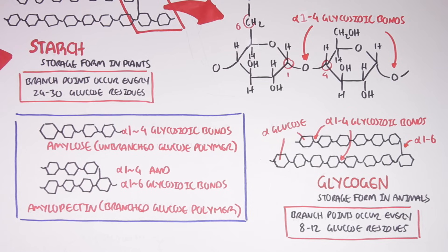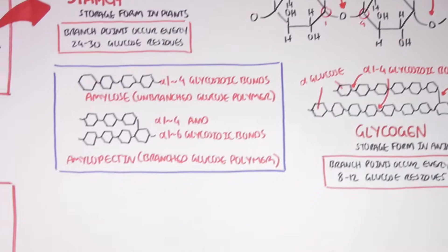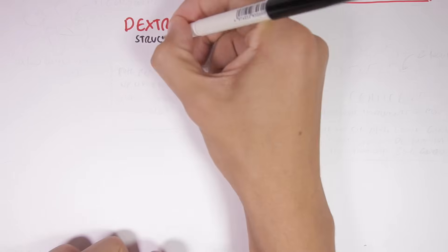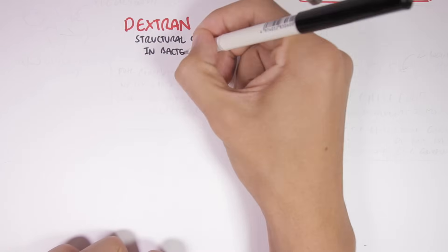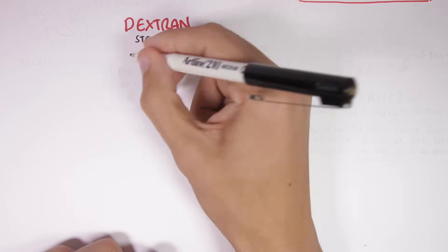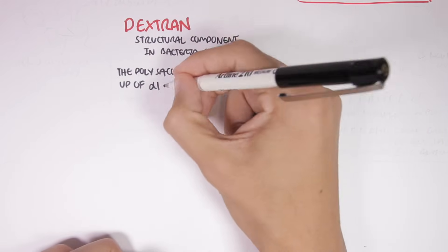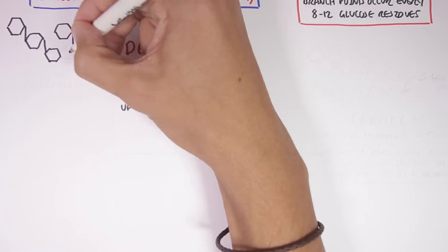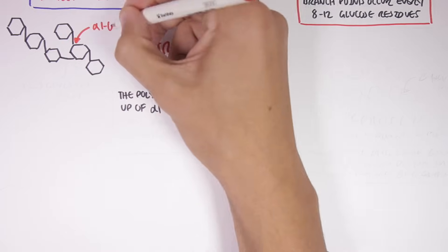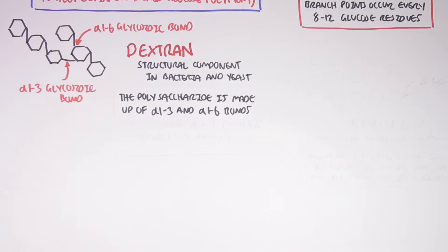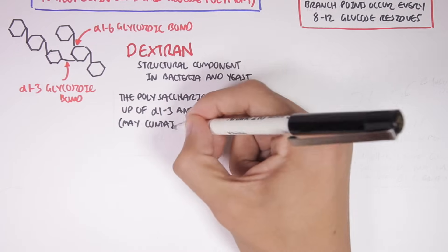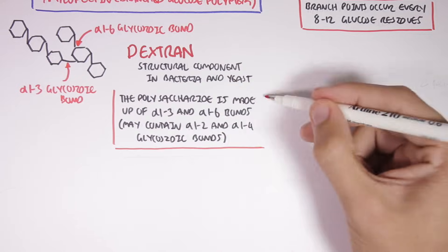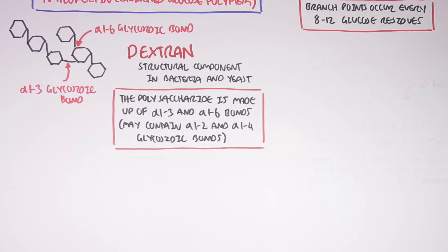Another type of polysaccharide is dextrans, which are structural components in bacteria and yeast. These polysaccharides are made up of alpha-1,3 and alpha-1,6 glycosidic bonds. However, dextrans can also contain alpha-1,2 and alpha-1,4 glycosidic bonds.